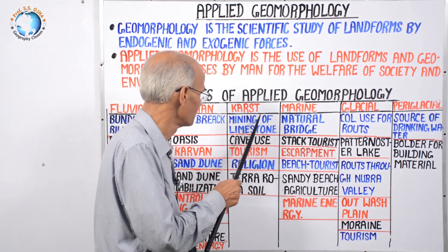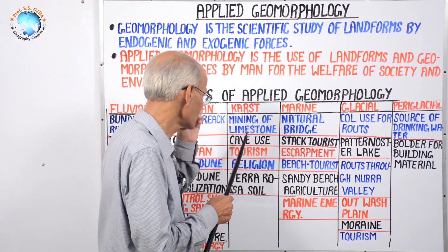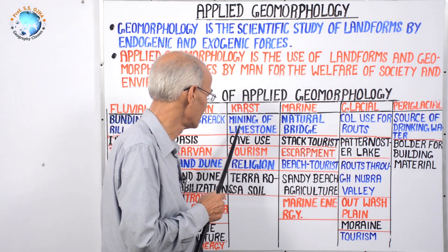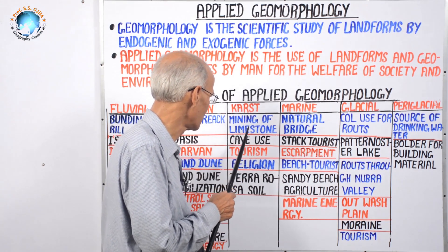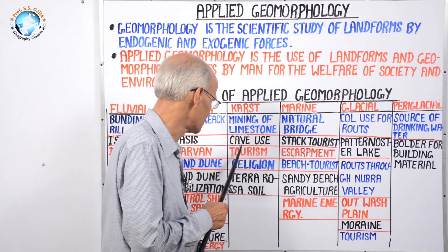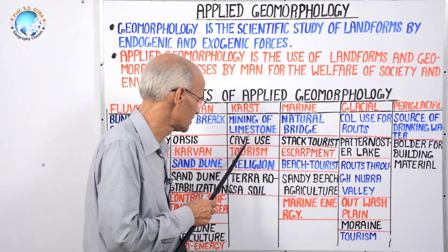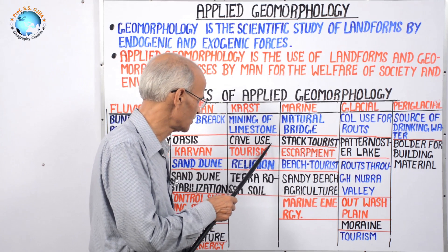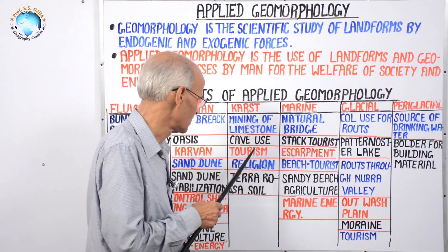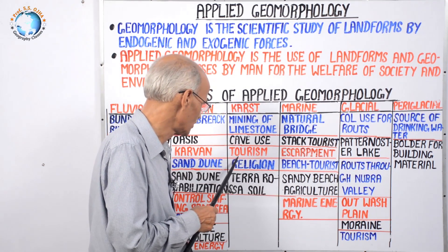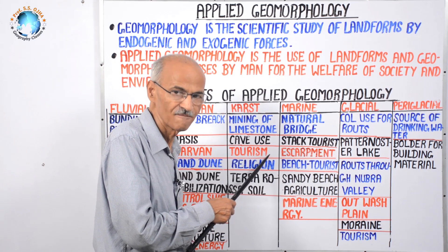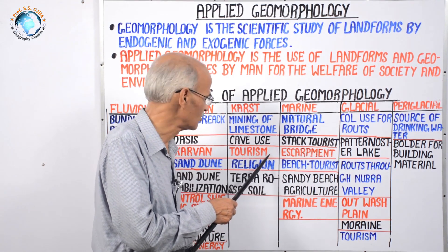Next is karst topography, process, and applied geomorphology. In karst regions, limestone structures predominate, and mining of limestone is practiced for the cement industry. Next is caves — the scientific study of caves is called speleology, and caves are natural geomorphic features of interest.